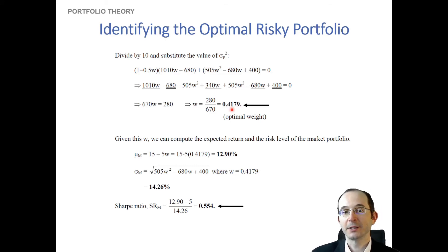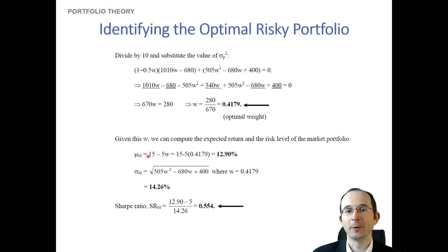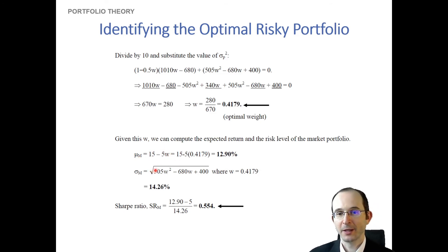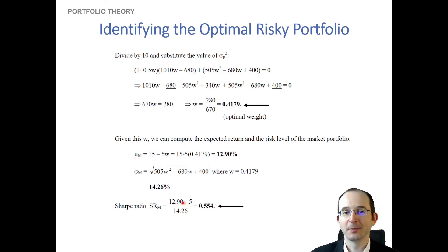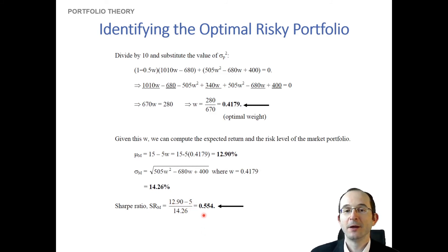Given that weight, we can calculate the expected return and standard deviation of the optimal portfolio by plugging into our simplified formulas. The Sharpe ratio — the ratio of the risk premium to the standard deviation — gives us a Sharpe ratio of 0.55.